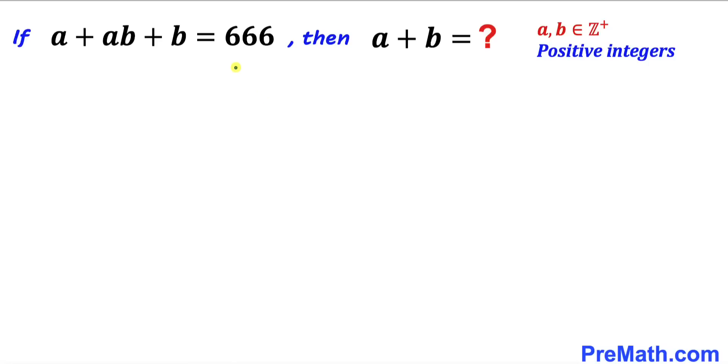Welcome to PreMath. In this video we have this conditional statement: If a plus ab plus b equals 666, then find the value of a plus b, where a and b are positive integers.